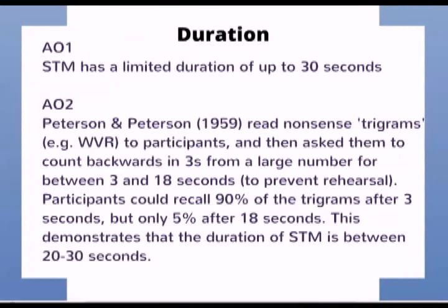Short-term memory has a limited duration of up to about 30 seconds. To study this, Peterson and Peterson read nonsense trigrams to participants, and then asked them to count backwards in threes from a large number for between 3 and 18 seconds. This was to prevent them from being able to rehearse the information. Participants were able to recall 90% of the trigrams after 3 seconds, but only 5% after 18 seconds, demonstrating that the duration of short-term memory is between about 20 and 30 seconds.